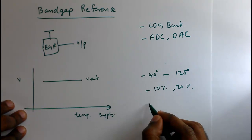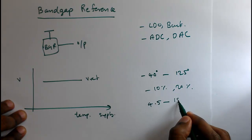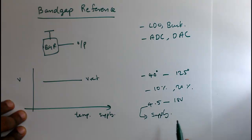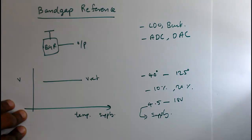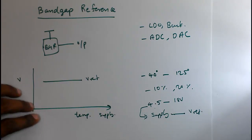For example, in automotive, you can have supply variation up to 4.5 volts to 18 volts or maybe higher than that. This will be the only supply available to you, and you have to design a band gap reference from that supply voltage, which can vary from 4.5 to 18 volts. So as a conclusion, band gap reference is a circuit which will give constant output voltage with respect to temperature and supply variation.